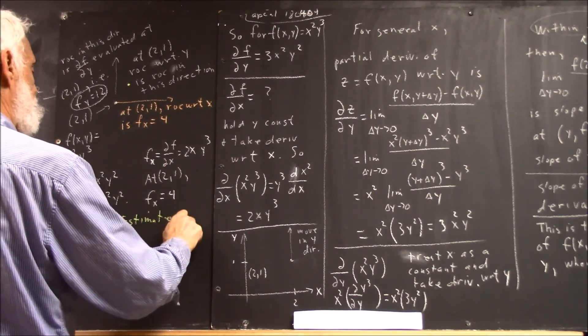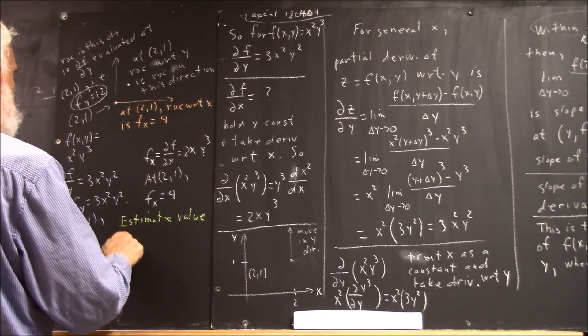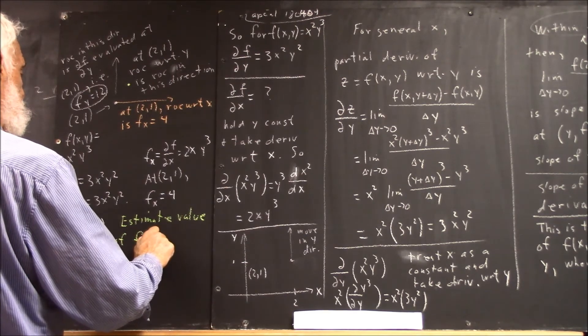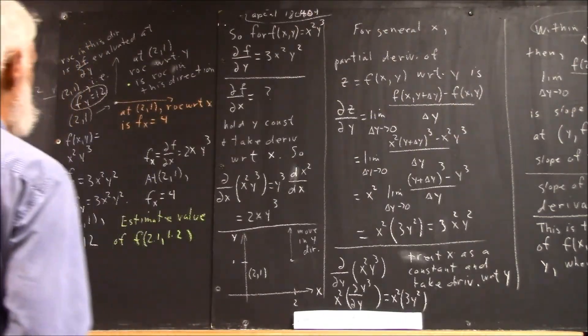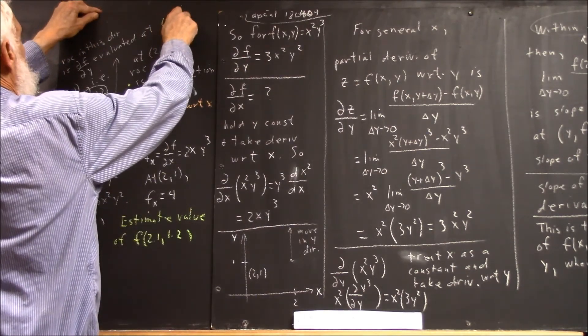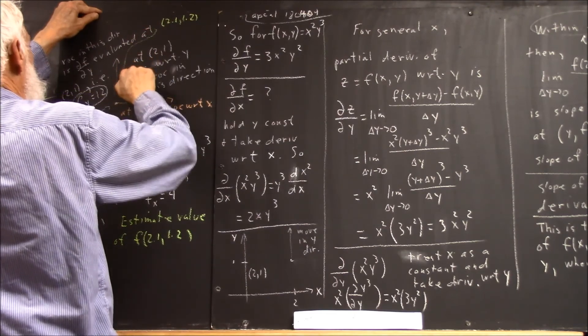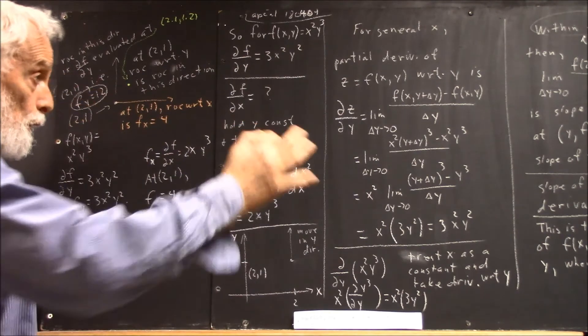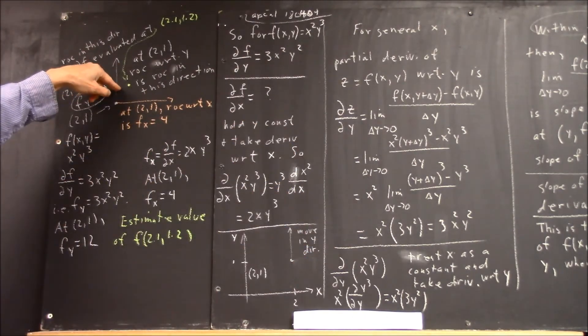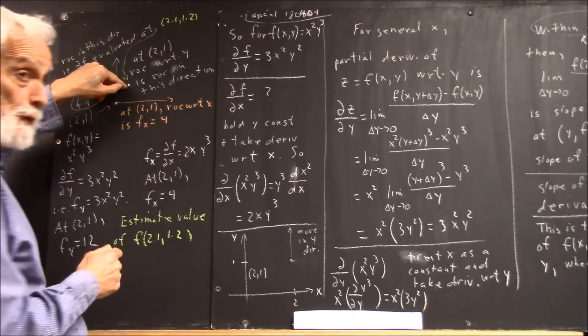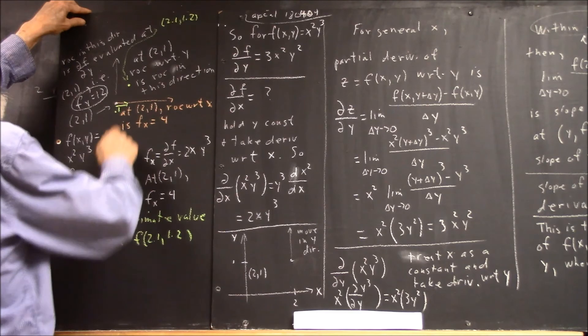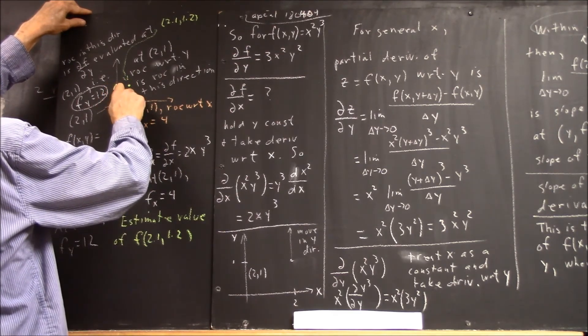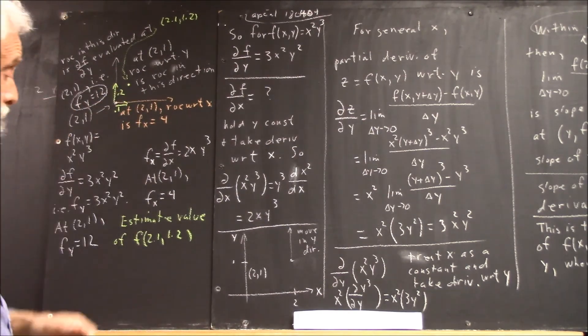Let's estimate the value of f of 2.1, 1.2. Well, there's the point. So, let's go ahead and say this is 2.1, 1.2, sneak an arrow in there somehow, throughout all this cluttered writing. I should have started in the middle of the board and expanded out, but I don't have that much foresight. Well, this means that to get from this point to this point, we can go over .1 unit and up .2 units, right?